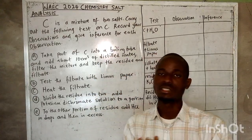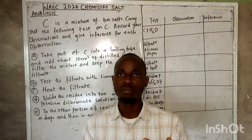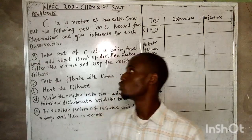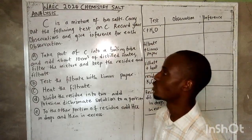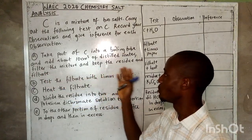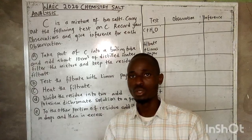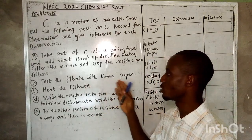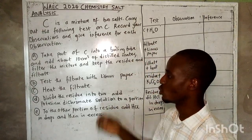Let's dive into the salt analysis question. We are working based on whatever preparation we could do to help you in your examination. We have sample C — it is a mixture of two salts — and we are told to carry out certain tests on C. We take part of C into a boiling tube and add water. Then we filter and keep the residue and filtrate separately, indicating that the salt contains one soluble and one insoluble component. We then test the filtrate with litmus paper to determine whether it is acidic or basic.